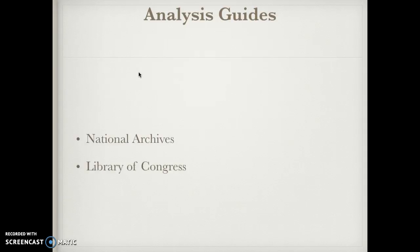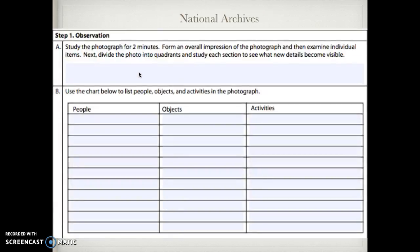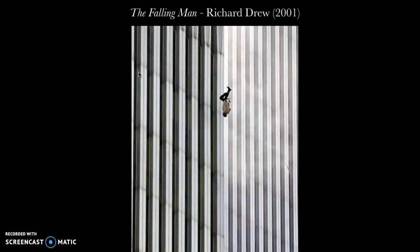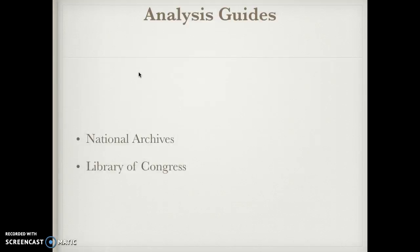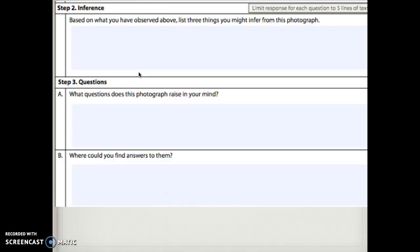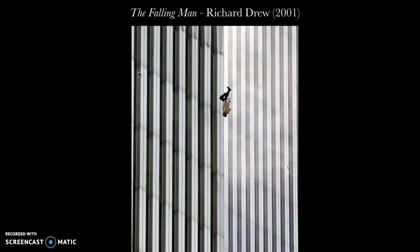There are a couple of historical analysis guides for photographs that I found online — from the National Archives and the Library of Congress. The first part from the National Archives asks you to study the photo, give your impressions, and chart what's going on: what you see, what you infer from the date and title. Next, you make inferences on what you observe — for example, if it's dated 2001, I can infer it's probably September 11th, the man is falling, and those are probably the World Trade Centers behind him.